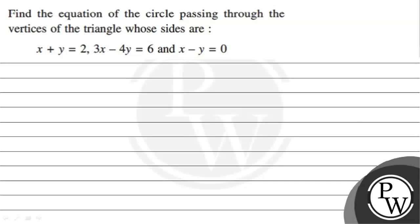Hello. Let's read the given question. The question states: find the equation of circle passing through the vertices of a triangle whose sides are x plus y equal to 2, 3x minus 4y equal to 6, and x minus y equal to 0.